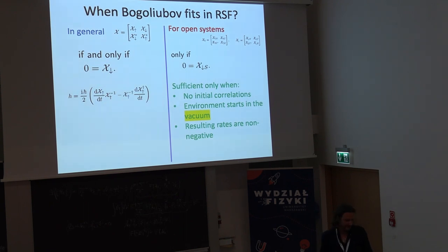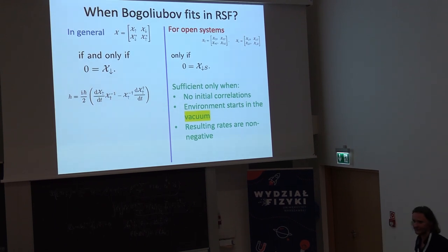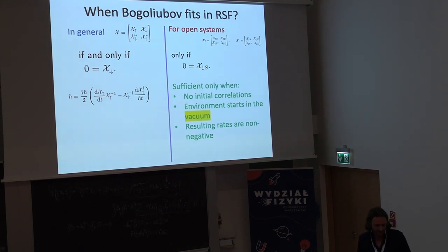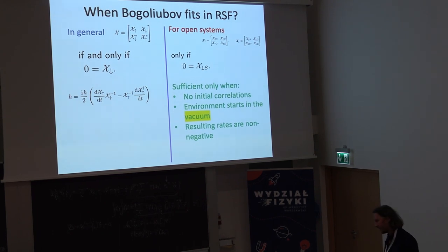So, the question which we were asking ourselves is when the Bogoliubov transformation fits into this reduced state of the field. So, when the physics behind is kind of similar. And it's not surprising that in the full, fully general case, the necessary and sufficient condition for the Bogoliubov transformation to fit into this description is that the part which mixes creation and annihilation vanishes. This is the only choice. And then, of course, in such a case, the evolution is Hamiltonian. There is no damping. There is nothing. So, the picture is completely boring.